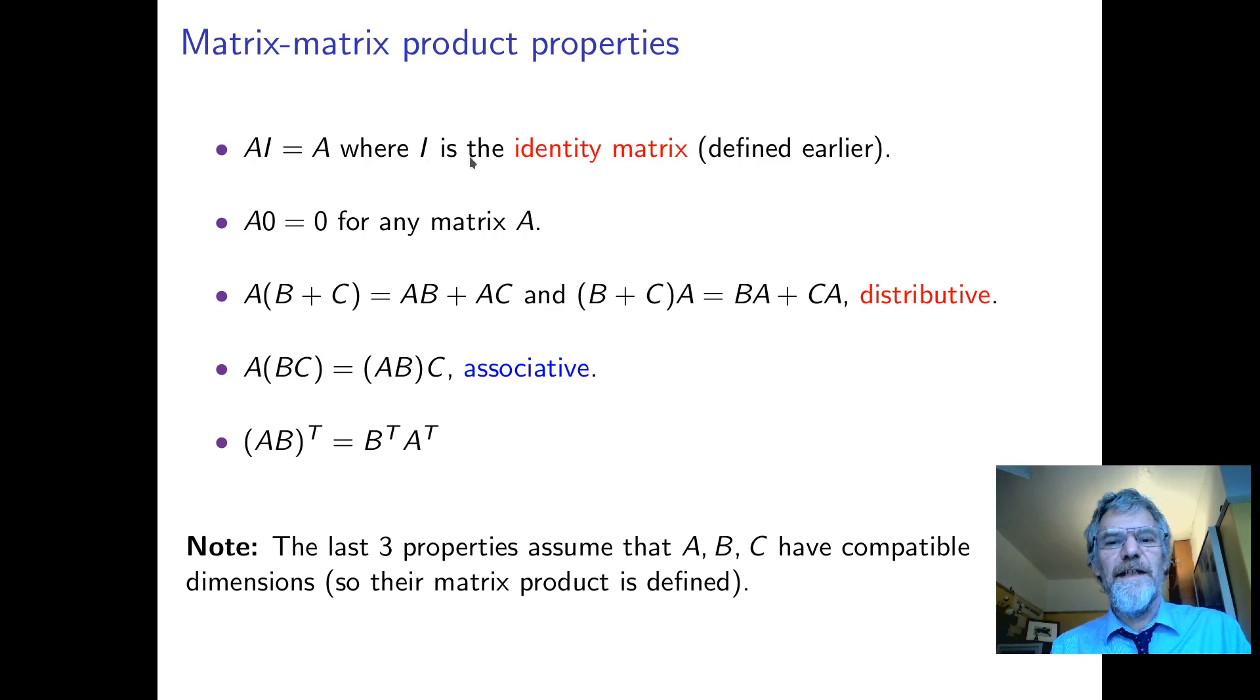Some special properties. The identity matrix, which was just ones on the diagonal, that doesn't do anything when you multiply it. In fact, you can multiply on either side with the identity matrix of the correct size. And it gives you back the same matrix A.